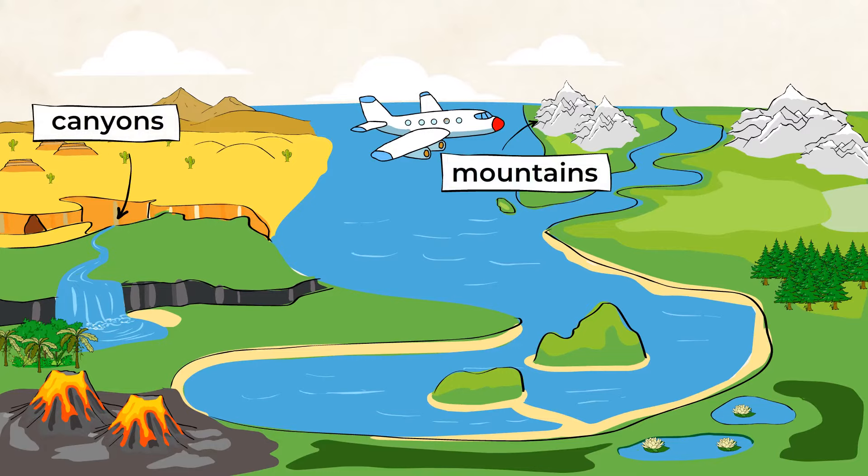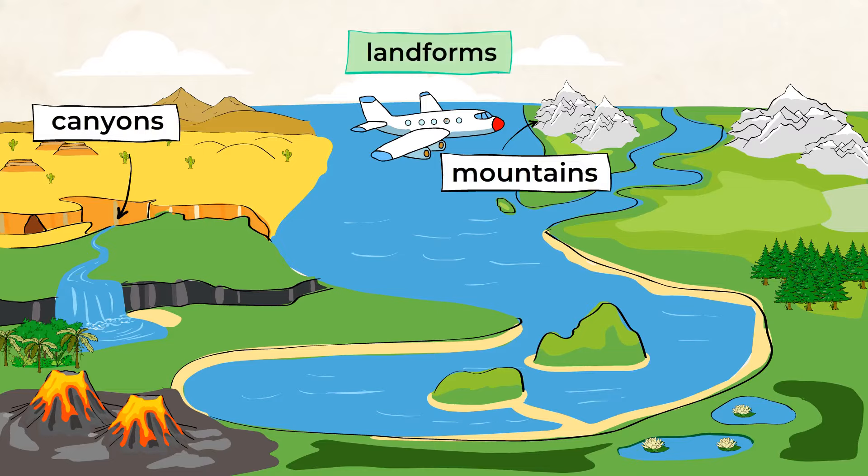Just look at all the different parts of our planet. From the deepest canyons to the highest mountains, our Earth is full of spectacular landforms. A landform is a feature of the ground of Earth.